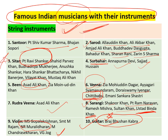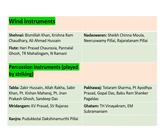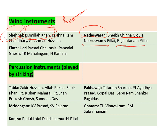Next are wind instruments. Shehnai: the most famous name you must remember 100% is Bismillah Khan. Other names include Krishna Ram Chaudhari and Ali Ahmed Hussain. Flute is also a very important wind instrument. The important name for flute is Hariprasad Chaurasia — this name you must remember 100%.